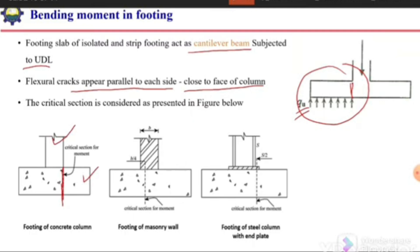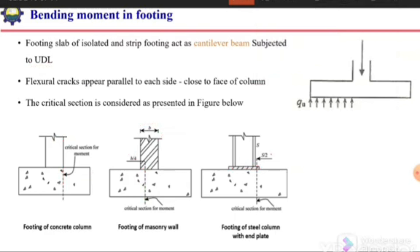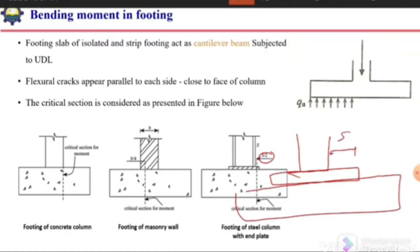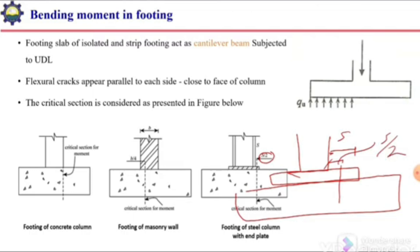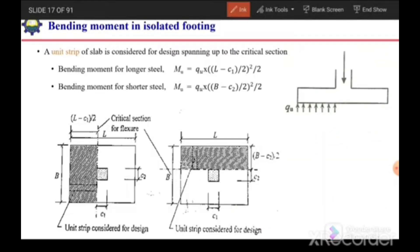For masonry walls, the critical section lies inside the wall. If the width of the wall is B, the critical section will be at a distance B/4 inside. In the case of a concrete footing under a steel column with a steel base plate, the critical section will be at a distance s/2 from the face of the column, where s is the projection of the base plate beyond the column face.